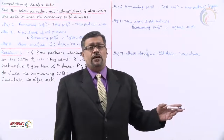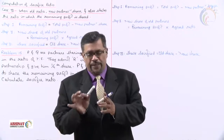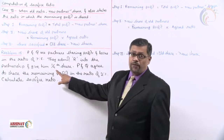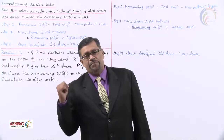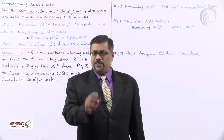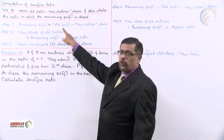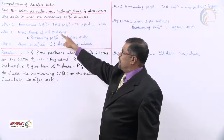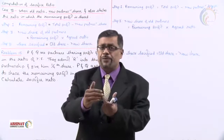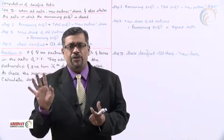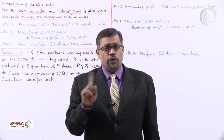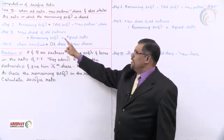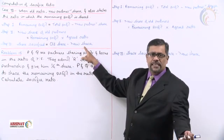Step 1: Remaining profit. In calculating the new profit sharing ratio, remaining profit equals total profit minus new partner's share. The new partner's share is usually in fraction, so total profit is always assumed as 1; if in percentage, it is 100. Step 2: New share of old partners is not given. We distribute remaining profit in the agreed ratio, not the old ratio, since agreed ratio is given. Step 3: Share sacrificed equals old share minus new share.